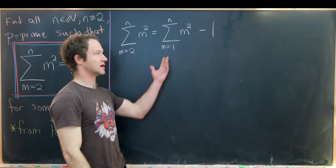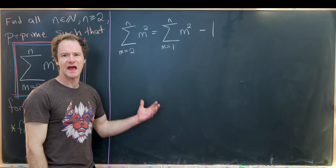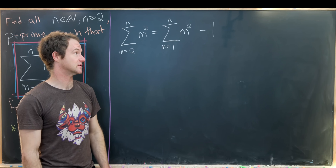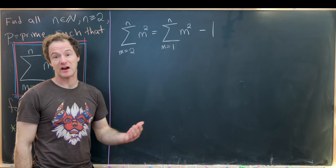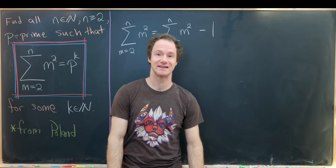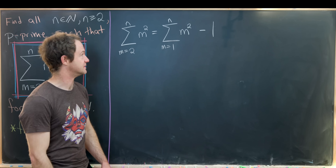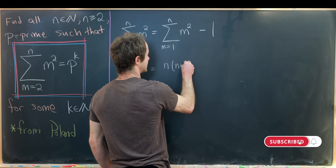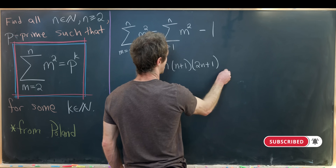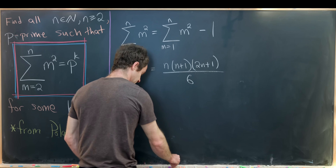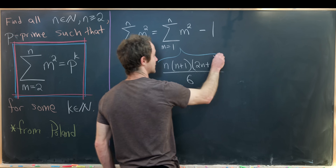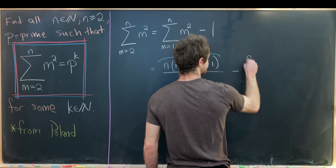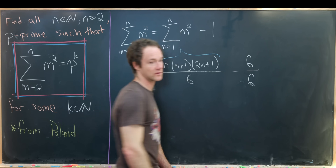Really it's minus 1 squared, but 1 squared is obviously equal to 1. Rather than deriving the well-known formula for the sum of the squares, I'll leave it to you to look that up — if you're taking such an exam, you can just assume it to be true. This adds up to n(n+1)(2n+1) all over 6. That's the sum of the first n squares, and then we subtract 1, written as 6 over 6.